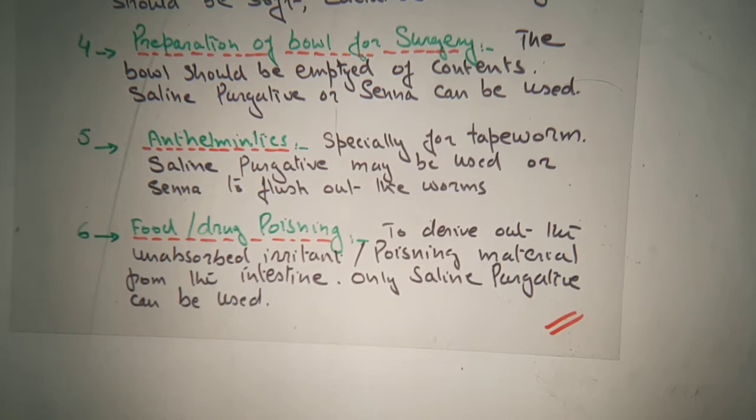Our next topic will be the antidiarrheal drug. The previous topic was laxatives and purgatives which we discussed in detail, particularly the osmotic laxatives and purgatives working by the process of osmosis. Osmosis is the movement of solvent particles from lower solute concentration towards higher solute concentration through a semi-permeable membrane. Now today we are going on to the next topic: antidiarrheal drugs.